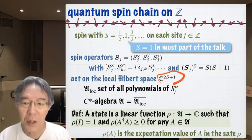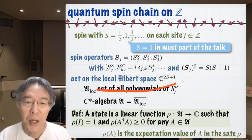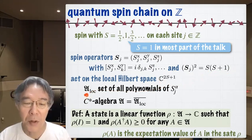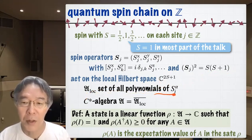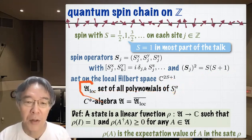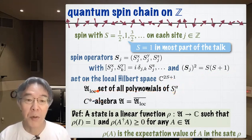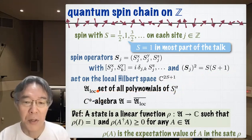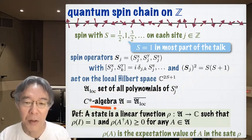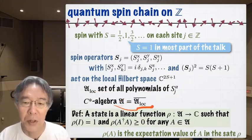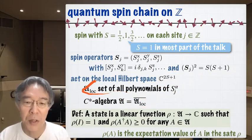They act on this Hilbert space. By R-loc I denote the set of all polynomials of these spin operators — in other words, R-loc is the set of all local operators of this spin system.